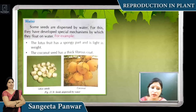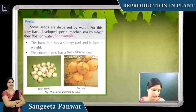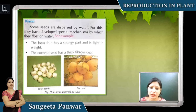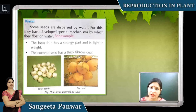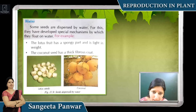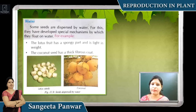Seeds can also disperse by water. Lotus fruits are spongy and lightweight. Similarly, coconuts have thick fiber coats. When they float in the water, they float because of their coating. Whenever they come in contact with land, they grow in that area.